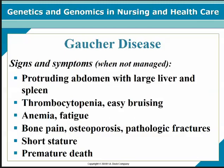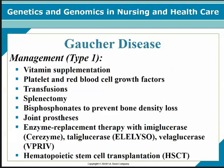Signs and symptoms of Gaucher's when not managed: protruding abdomen with large liver and spleen, thrombocytopenia and easy bruising, anemia, fatigue, bone pain, osteoporosis, pathologic fractures, short stature, and premature death if untreated. Management would include vitamin supplementation, platelet and blood cell growth factors to stimulate bone marrow production, transfusions, splenectomy, bisphosphonates to prevent bone density loss, joint prosthesis, enzyme replacement therapy, or a stem cell transplant.